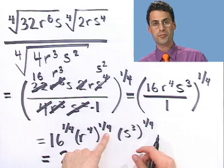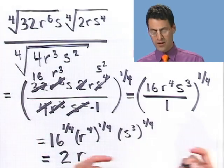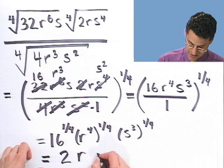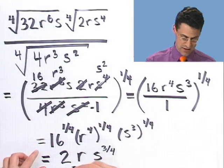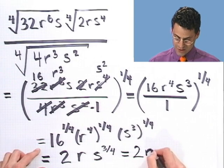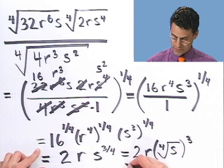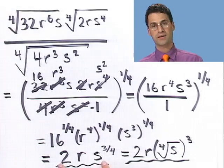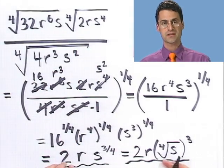So the answer is 2r times s to the 3/4 power. You could also express that in radical form as the fourth root of s, cubed. Either answer works, but frankly I prefer the exponent form. Either way, it's a dramatic simplification from that original horrific expression. Variables with radicals and exponents aren't a big deal — just use careful bookkeeping and cancel all common factors carefully.